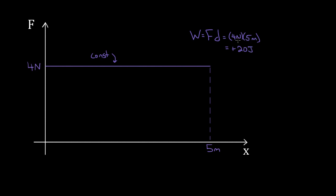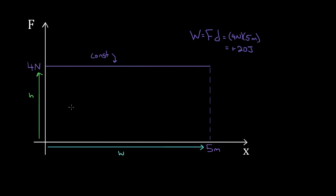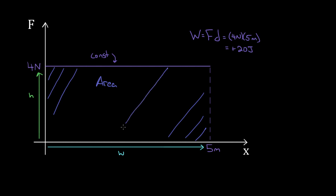If you're clever, you might notice that four Newtons times five meters is just the area of this rectangle. This line forms a rectangle on the force graph — four Newtons was just the height of this rectangle, and five meters was just the width. Height times width gives you the area of a rectangle. So what we found is: when the force is constant, one way to find the work done is using the work formula, but another way is to find the area enclosed by the graph — from the force line down to the x-axis. That area equals the work done.